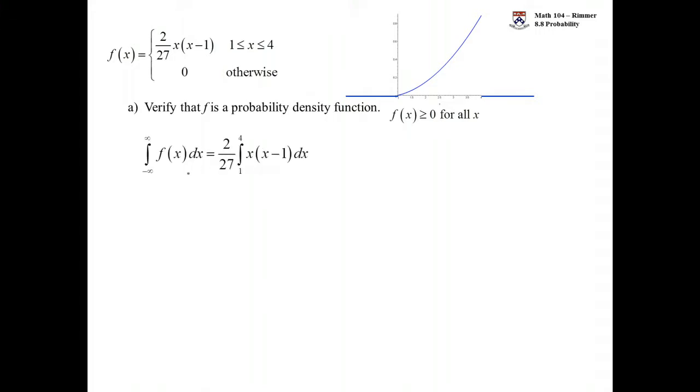To find the second property, we need to show that the total area is equal to one. Total area is really going to correspond from one to four because it'll be zero area up to one and zero area after four. We focus our attention from one to four. Our function: pull out the constant, multiply in the x, we'll have x squared minus x.